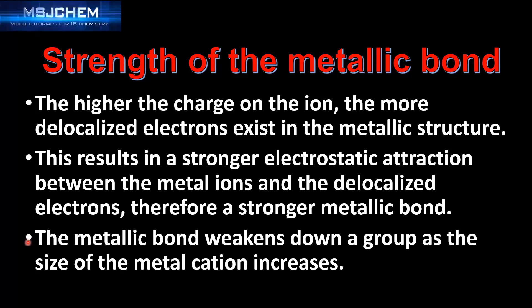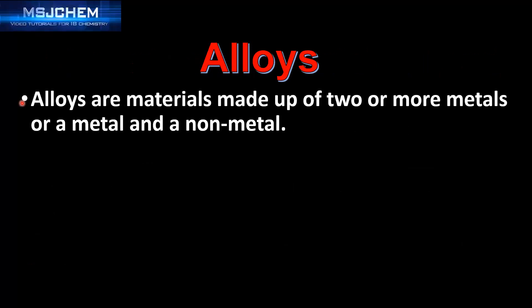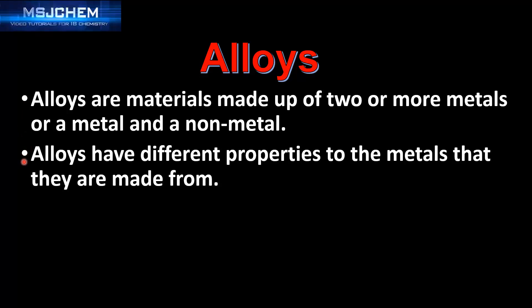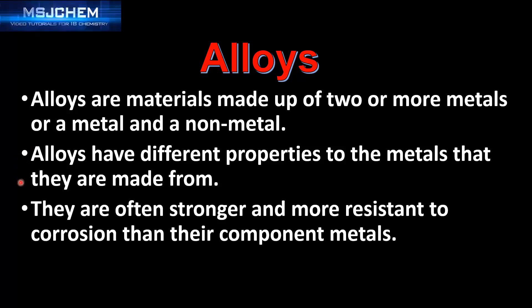The metallic bond weakens down a group as the size of the metal cation increases. Next we look at alloys. Alloys are materials made up of two or more metals, or a metal and a non-metal. Alloys have different properties to the metals they are made from; they are often stronger and more resistant to corrosion than their component metals.